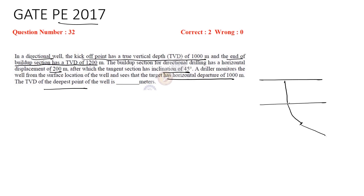Let's draw a schematic. The KOP, that is the kickoff point, is at 1000m. The total horizontal departure is given as 1000m, and the buildup section has a horizontal displacement of 200m — that means this particular section has 200m of departure. It has also been given that the angle is 45 degrees.